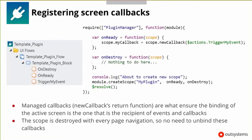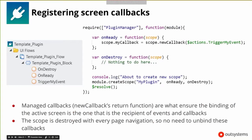Let's see how this is used in detail. When you need to register a screen callback like TriggerMyEvent, in the OnReady you configure JavaScript to define these callbacks. You wrap the screen callback you want to call — TriggerMyEvent — around the new callback. This new callback makes the plugin aware of which screen should receive the callback. This callback is stored on a special variable called scope. The scope is destroyed with every page navigation, so on OnDestroyed you don't have to do much — the scope for the old page will be destroyed and variables will go away.